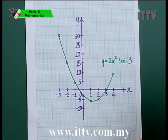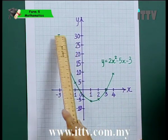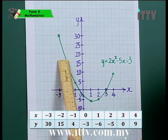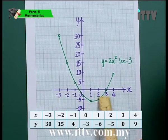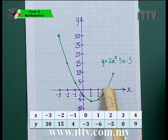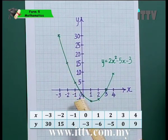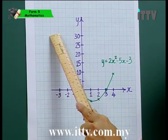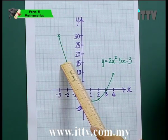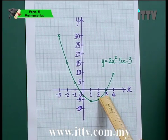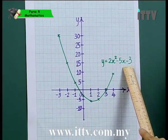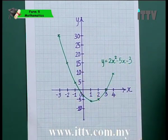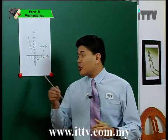Once you have all the values, plot the coordinates. For example, when x is negative 3, y is 30; if x is negative 2, y is 15; if x is negative 1, y is 4, and so on. Once you have plotted the points clearly, you will be able to see the shape of the graph. Use a pencil and connect all the points, making sure you obtain a smooth curve because this is the graph of a quadratic function. Make sure the graph passes through all the points, then label the graph. All 5 steps are actually pretty simple and you will get the graph.